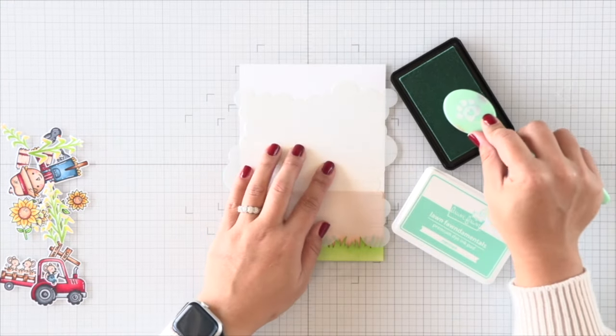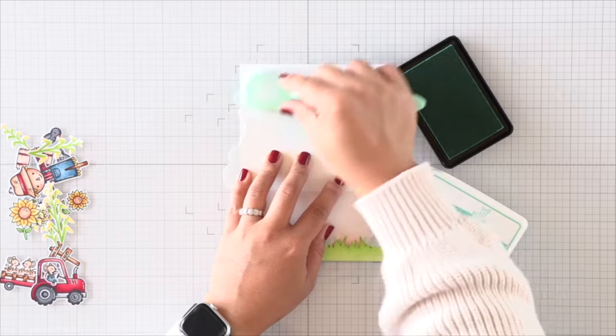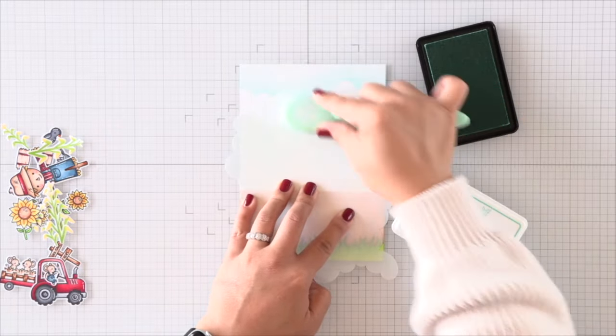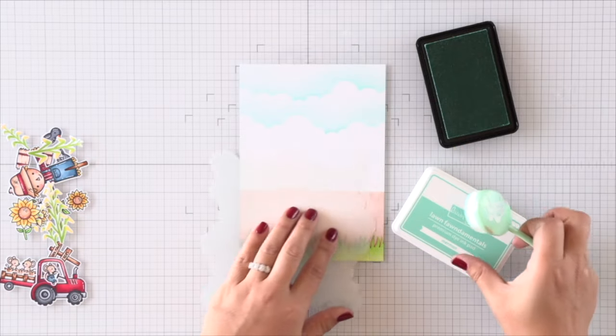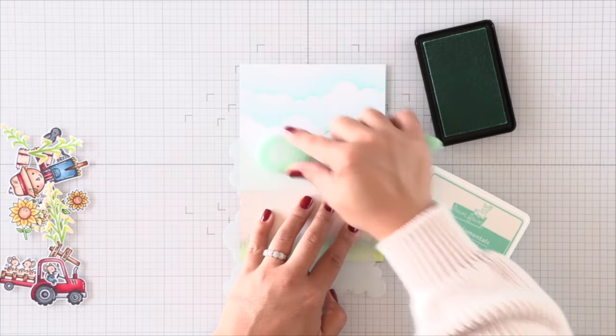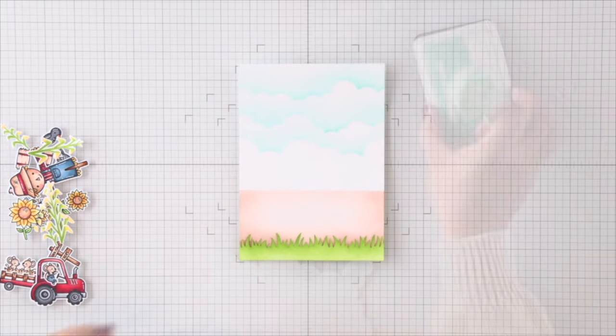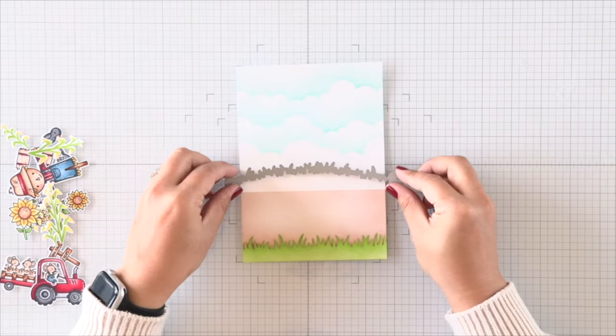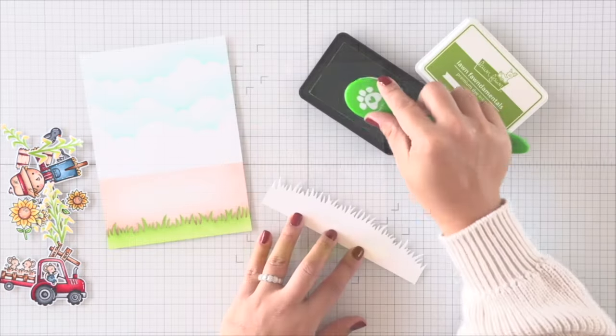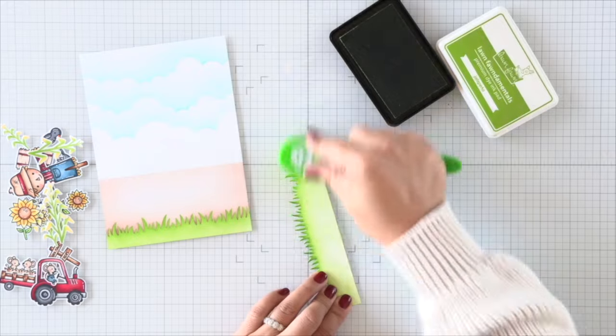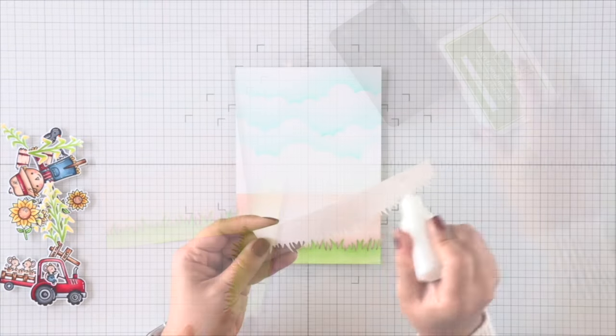I'm using Mermaid ink, and after every cloud layer I'm just going to turn my stencil counterclockwise and add another layer until I reach that dirt grounding that I have stenciled before. Now I wanted another grassy hill, so I'm using the Simple Grassy Hillside dies and I'm just gonna do a small strip of it so that we can add some perspective to our card.